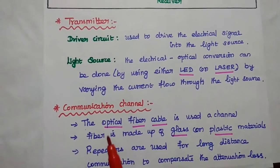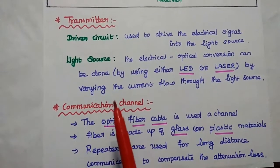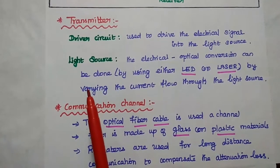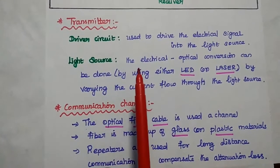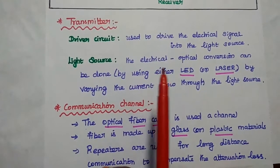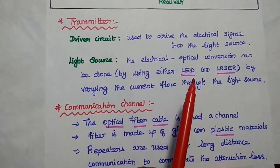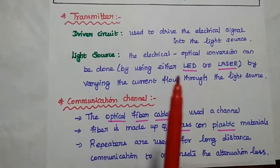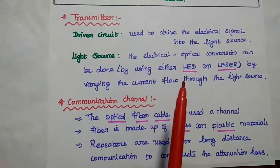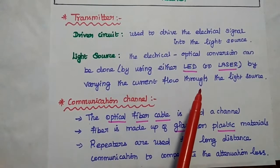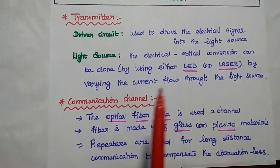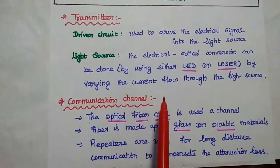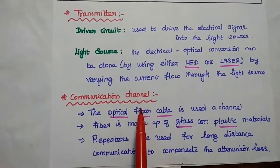Let's discuss these points. Transmitter: the driver circuit and light source are used. The driver circuit is used to drive the electrical signal into the light source. The light source is mainly used to convert electrical signal to optical signal. This can be done using either LED or laser.